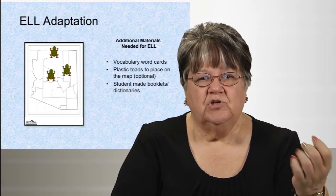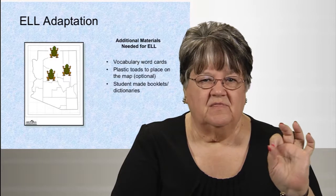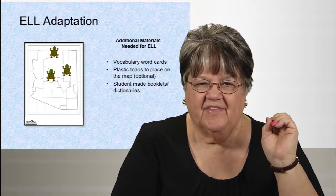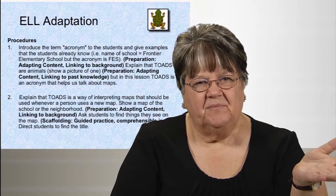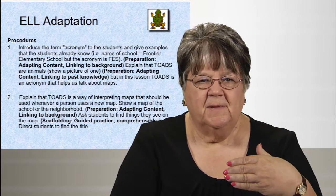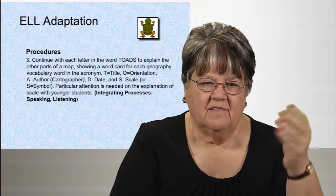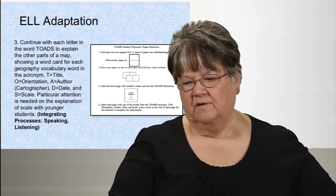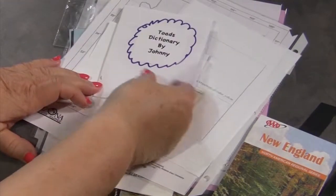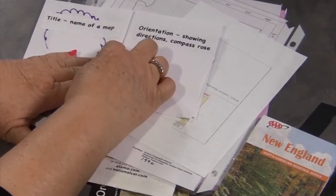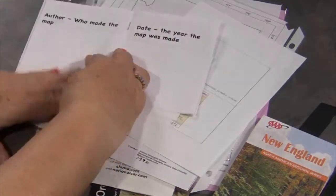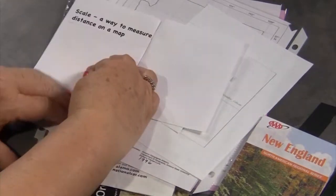For the ELL version, you can use little plastic TOADS with the words on them to make it more interactive. The procedures are basically the same — go through what each letter of TOADS stands for, have students fill in the worksheet. Students also make a little TOADS dictionary booklet with a title page, and then pages for each word — title, orientation, author, date, and scale — with an illustration below each term.